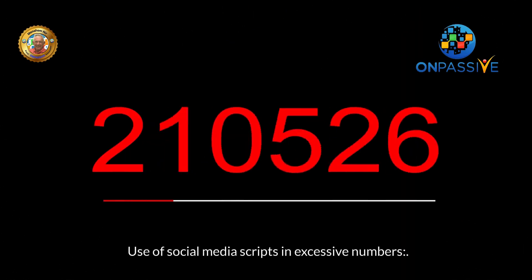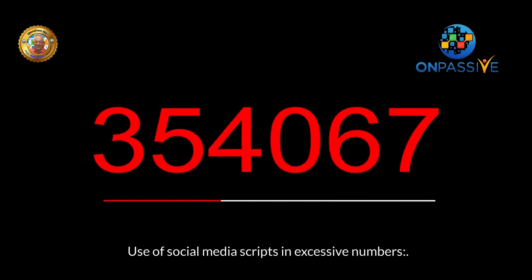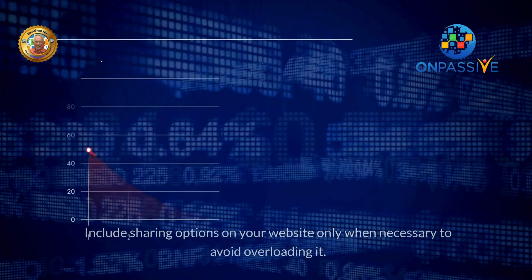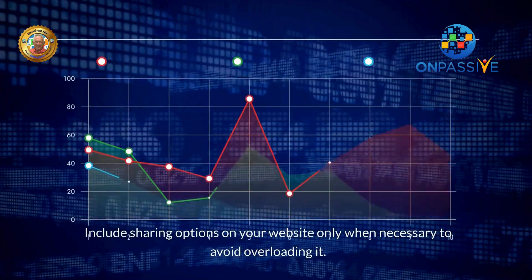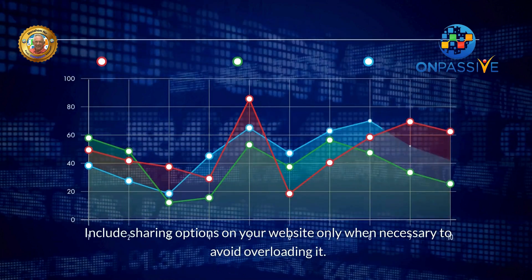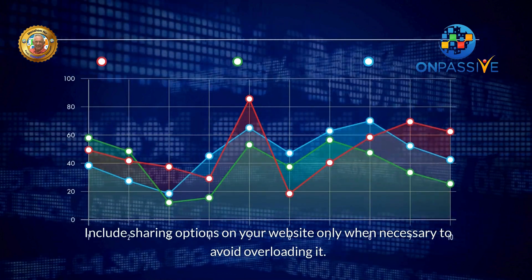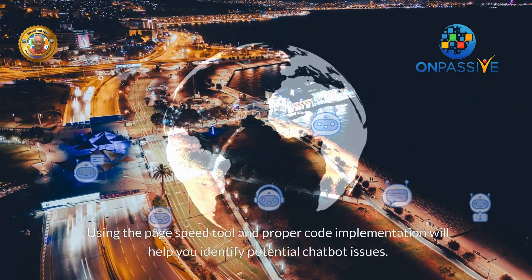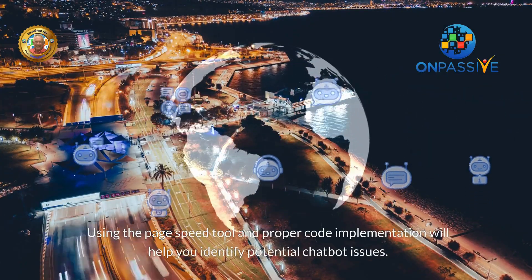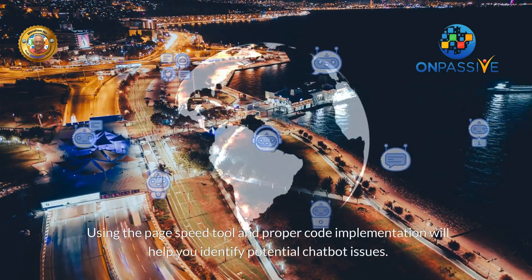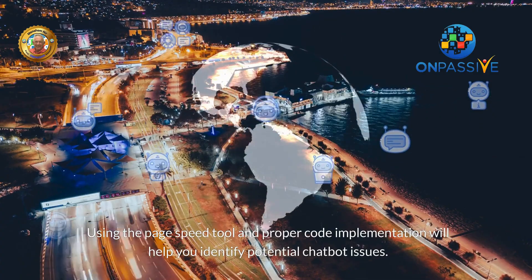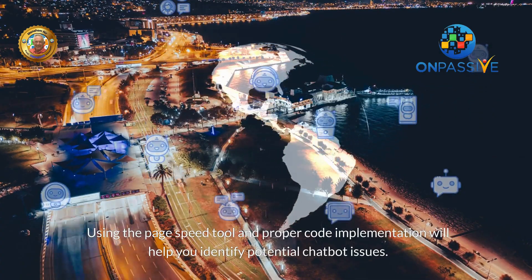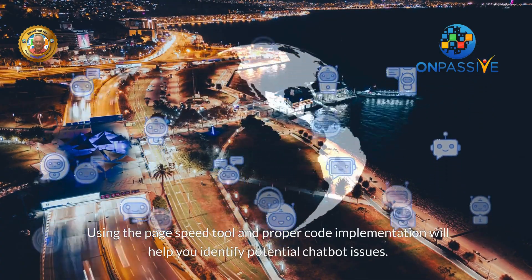Use of social media scripts in excessive numbers can be a problem. Include sharing options on your website only when necessary to avoid overloading it. Using the page speed tool and proper code implementation will help you identify potential chatbot issues.